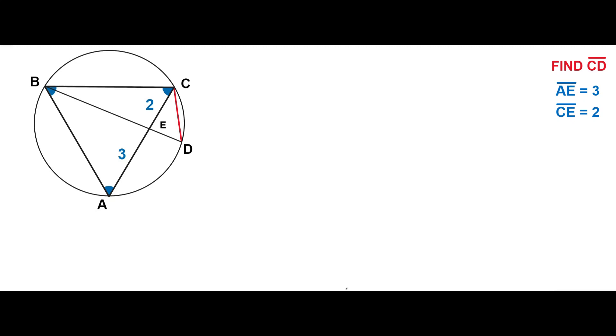Welcome to Geometry Masterclass. In this video, we have a circle and inscribed equilateral triangle ABC. The chord BD intersects the side AC, dividing it into two segments with lengths 2 and 3. The task is to find the length of the chord CD.